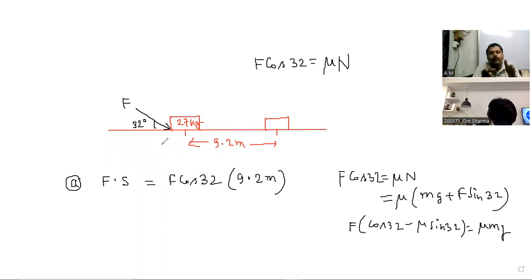So as the body is moving with constant v, acceleration is zero. Acceleration zero means net force is zero.